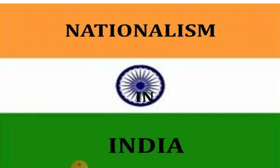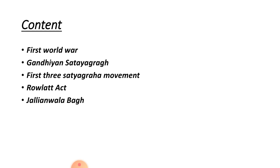Hello friends. Today we will read the first chapter of history, that is Nationalism in India. In this chapter we will read about Mahatma Gandhi and his movements. The topics are: First World War, Gandhi Satyagraha, First Three Satyagraha Movements, Rowlatt Act and Jallianwala Bagh.